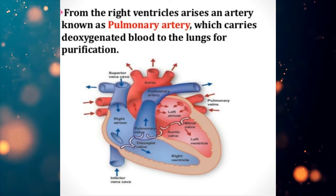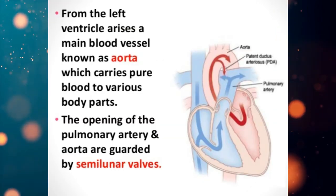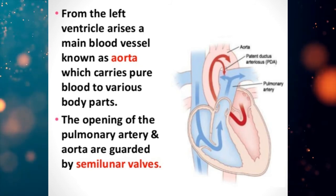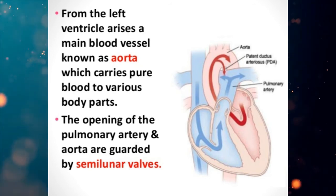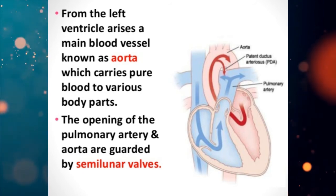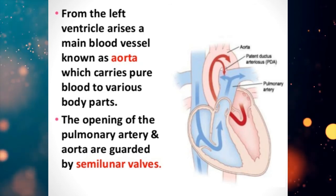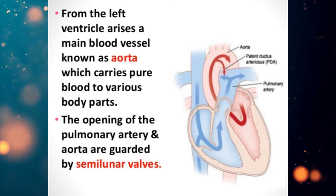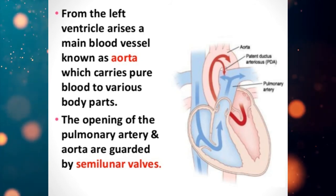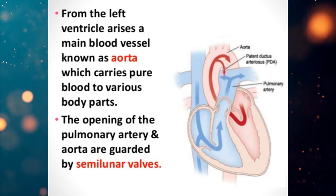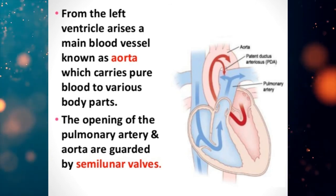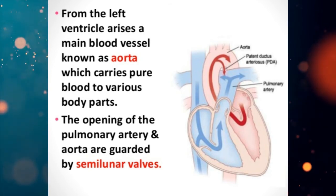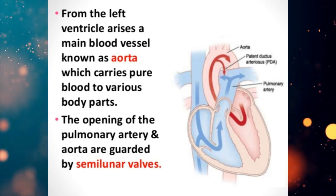From the left ventricle arises a main blood vessel known as the aorta, which carries pure blood to various body parts. The aorta is the largest artery of the body, arising from the left ventricle. The openings of the pulmonary artery and aorta are guarded by semilunar valves, which prevent the backward flow of blood from the pulmonary artery and aorta back into their respective ventricles.